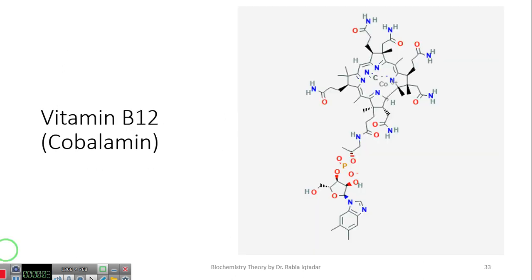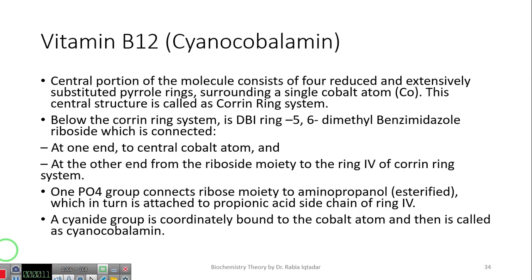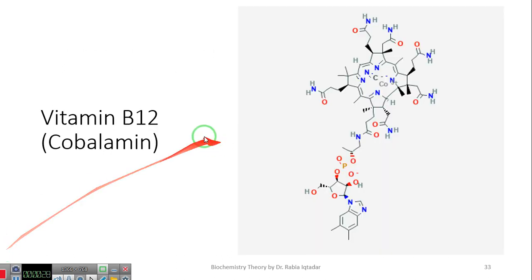Chemically cobalamin, here you can see, it has a very complex structure, but we will study it in a very simplified manner. Central portion of the molecule consists of four reduced and extensively substituted pyrrole rings. What is a pyrrole ring? Pyrrole ring is basically a five-membered ring with one nitrogen each. But here the pyrrole ring has a lot of substitutions. So when you look at the structure here, you will see one, two, three, four. These are the basic pyrrole rings, and on top of them you can see a lot of things attached, which we are calling as substitution.